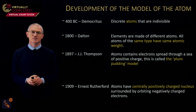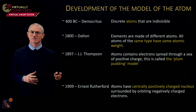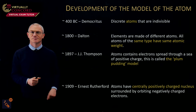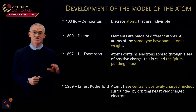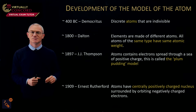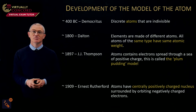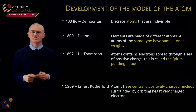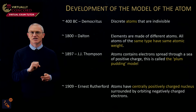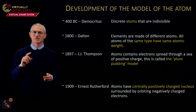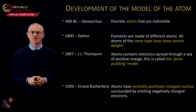Around 1909, Ernest Rutherford decided that atoms have a centrally positively charged nucleus surrounded by orbiting negatively charged electrons. He determined this through the gold foil experiment — he fired helium nuclei at a piece of gold foil. Most went straight through, meaning most of the atom is empty space, but some were deflected, indicating a densely packed positive nucleus with electrons on the outside.